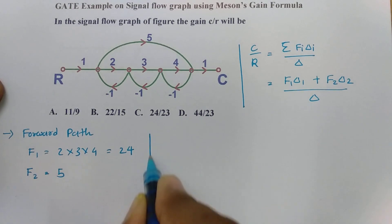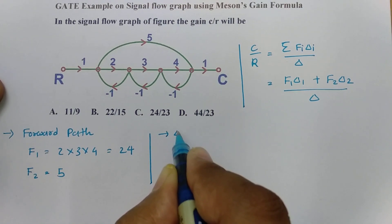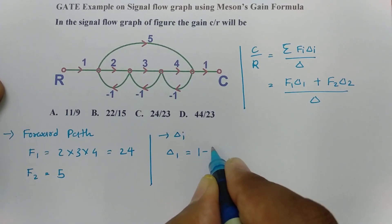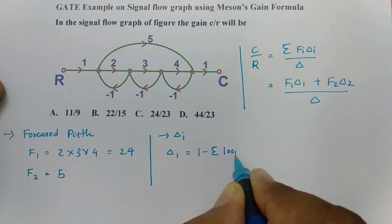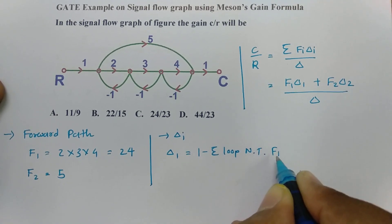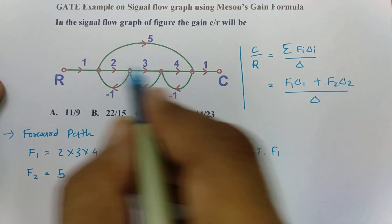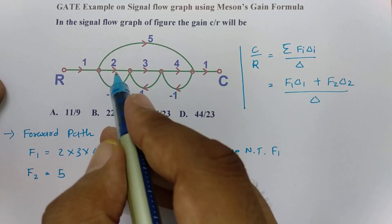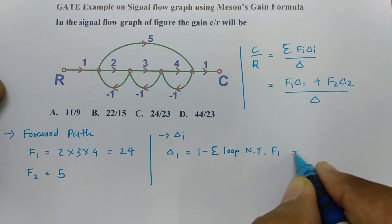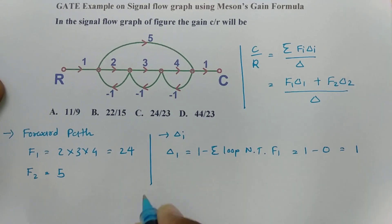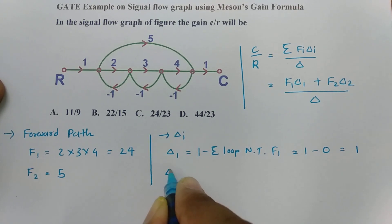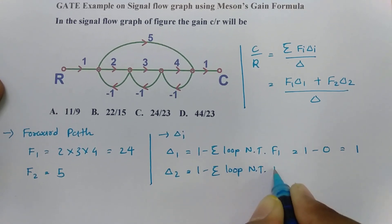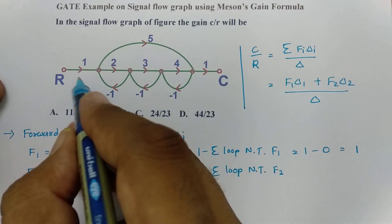Now we need to calculate delta_i. For delta1: delta1 equals 1 minus the sum of loops not touching forward path F1. The first forward path is 2 into 3 into 4. All loops are touching this path, so delta1 equals 1 minus 0, which is 1.